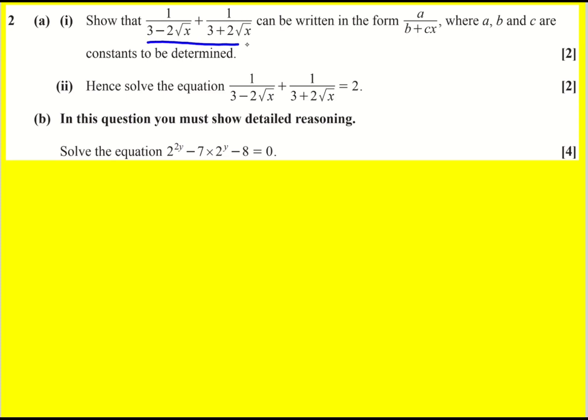Show that this expression here can be written more simply as shown. Okay, let's put it over a common denominator. So what I'm actually going to be doing is multiplying the first one by 3 plus 2 root x. In fact, this is what you would do if you were going to rationalize the denominator.